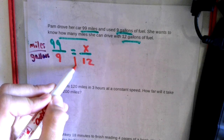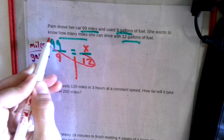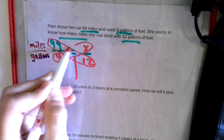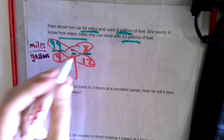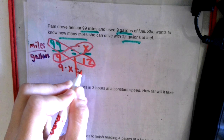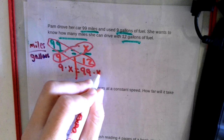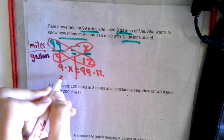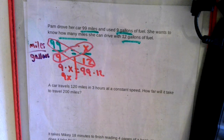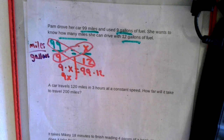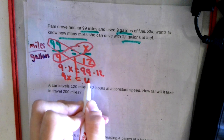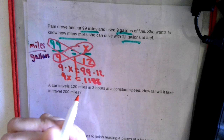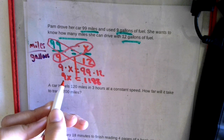So we've done proportions, so now we actually have to solve our means and our extremes. So we have nine times X, so nine times X equals 99 times 12. We know that number and letter shoved together, so that's nine X. And then we just do the math: 99 times 12, and we're going to get 1188.